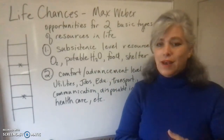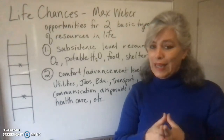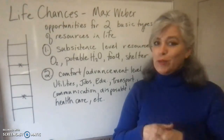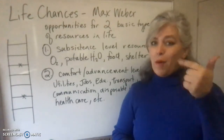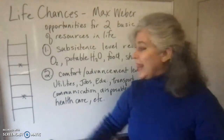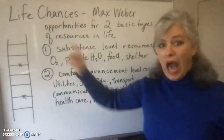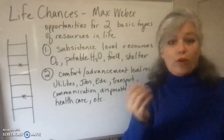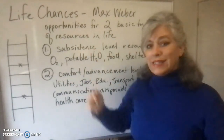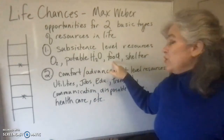These life chances that we're talking about are not equal for everybody. Just because we have an open system of social mobility in the USA and a class system where you're supposed to be able to achieve your income, occupation, and education level — it does not mean that this person and this person have the same life chances for education, for advancement, for comfort, or even for subsistence as each other. Just look at food for an example.